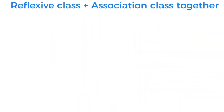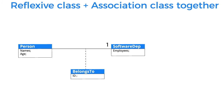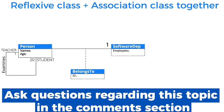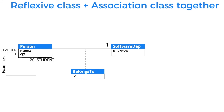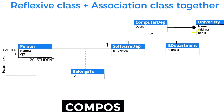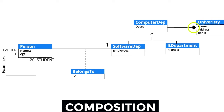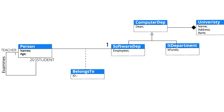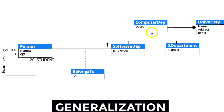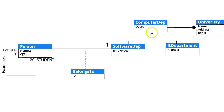In this example, we use reflexive class and association class together. A person belongs to a software engineering department — 'belongs to' is the association, and it has its own property, making it an association class. A person can be a student or a teacher; if both contain the same properties of name and age, and a teacher examines a student with the same properties, it becomes a reflexive class. The diagram also shows that the computer science department is a composition part of the university, and it is a superclass of two subclasses: software engineering department and IT department.